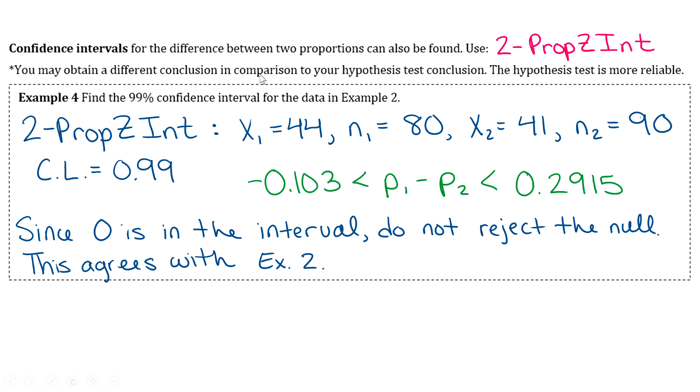Up until this section, basically with this section it is possible that you could get a different conclusion from your hypothesis test as the confidence interval. I don't think you guys will actually see it in any problem, but if you're out there in the real world doing this and you do come across that, just know that the hypothesis test is more reliable.